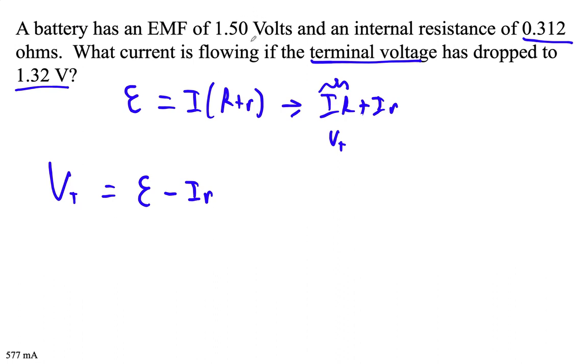This is our terminal voltage: 1.32 equals 1.5 minus I times 0.312, where 0.312 is our internal resistance and we need to solve for the current I.